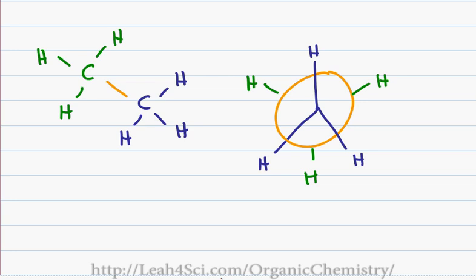When you look at a Newman projection, you're looking directly down the bond angle so that you can see how the substituents on the front carbon and the substituent on the rear carbon react with each other.